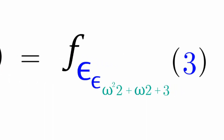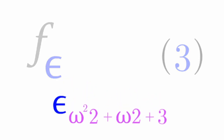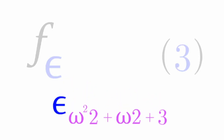Now pay attention to the simplified omega cubed. This is the index of epsilon. Let's focus on epsilon_{ω³} first.